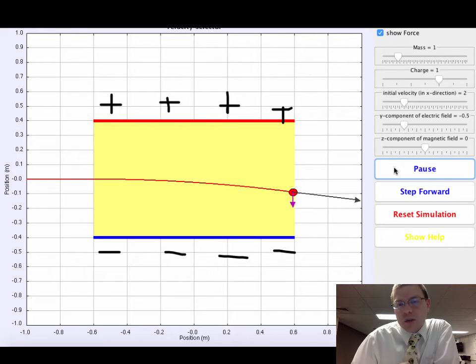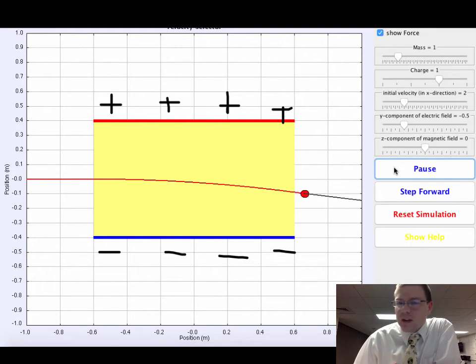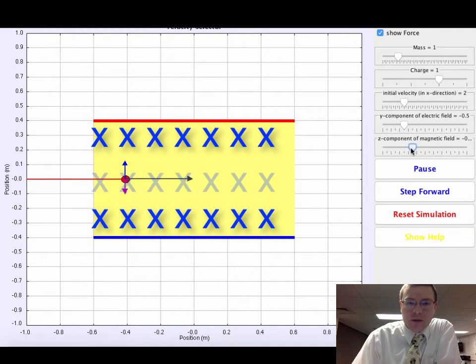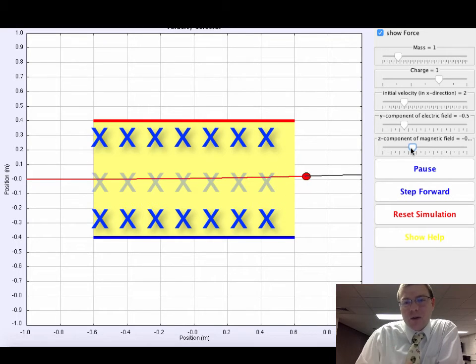What we want to do is make sure we can maintain a straight line motion through this selector so that anything going through will go at one particular speed. To deflect that charge upwards and create an upward force, we can increase a magnetic field on this charge. So if I turn on a magnetic field, now you can see there's a blue arrow representing magnetic field force. If you do the V cross the magnetic field into the page, you get an upward magnetic force.